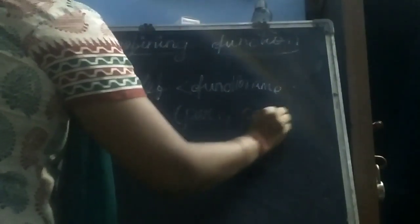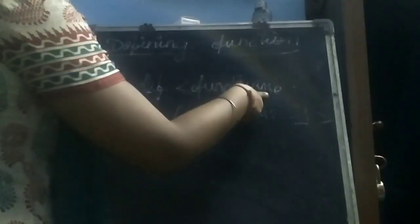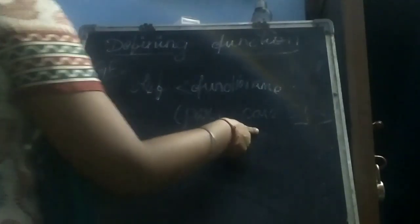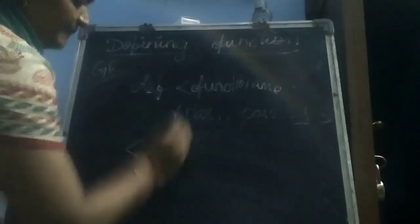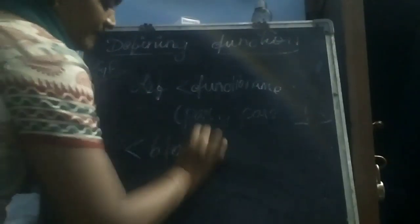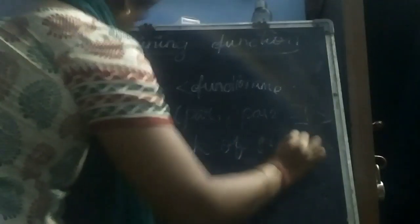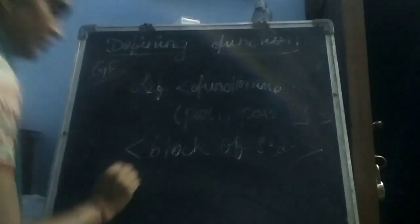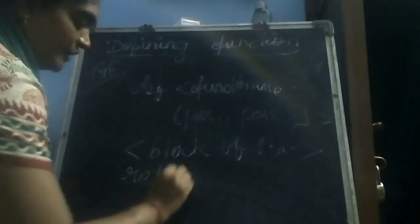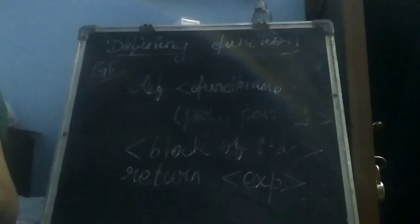In the function name we pass a parameter list: parameter1, parameter2, up to parameter n. In the block of statements we type our code, and if it is going to return a value we write `return expression`. This is the general syntax for defining a function.